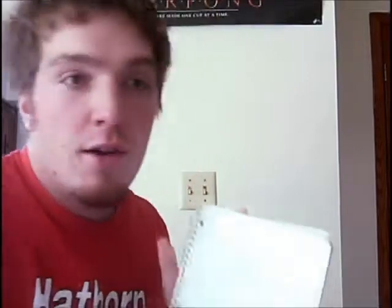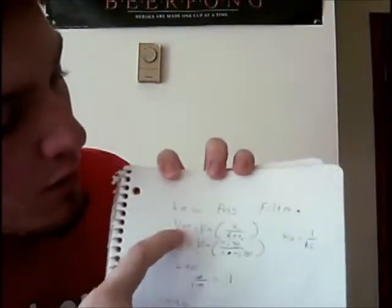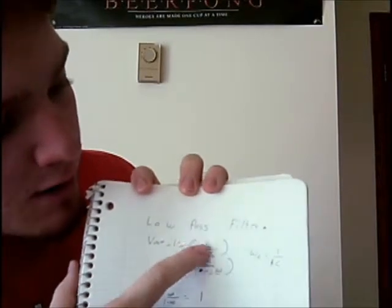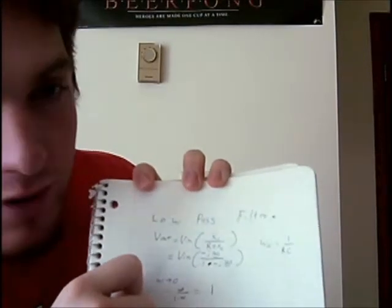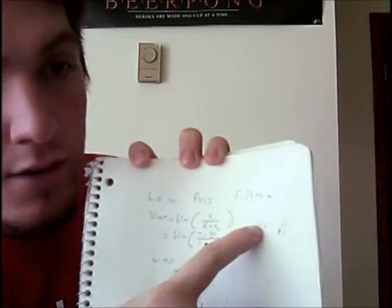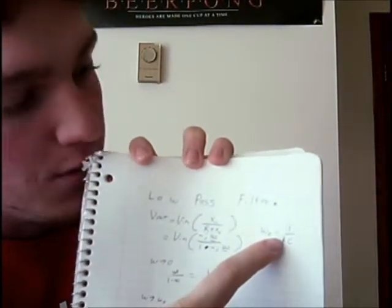So our low pass calculations started out the same way. With first we used our voltage divider again except for this time our capacitor resistance was on top. And we also stated that W naught was still equal to one over RC.